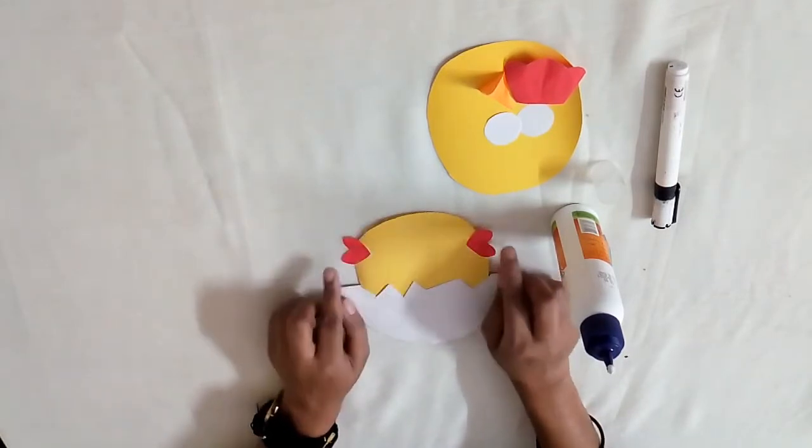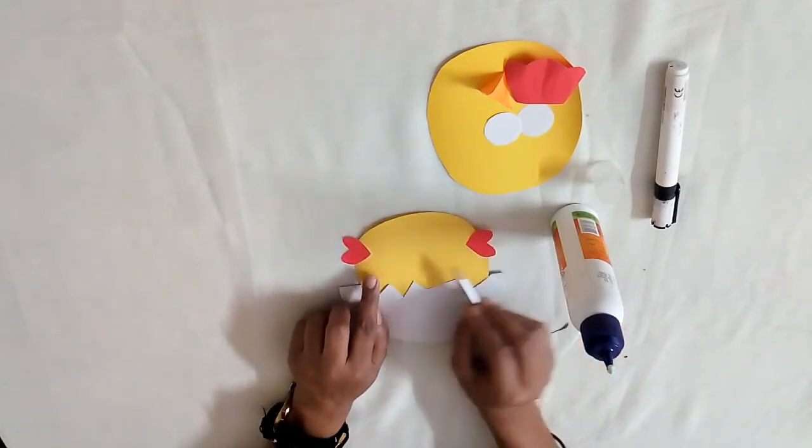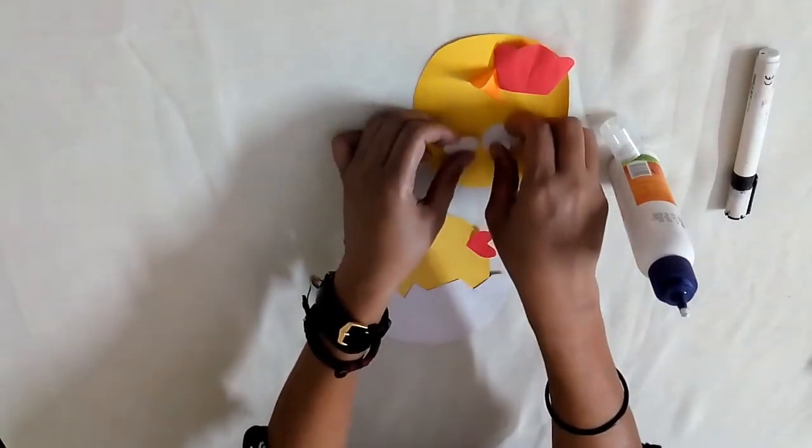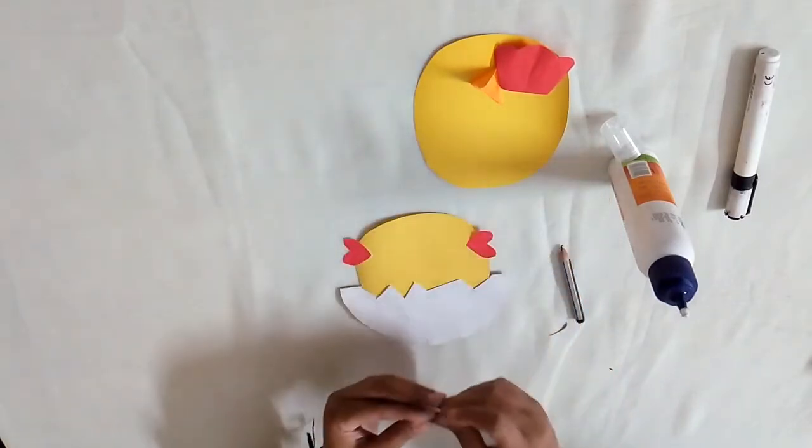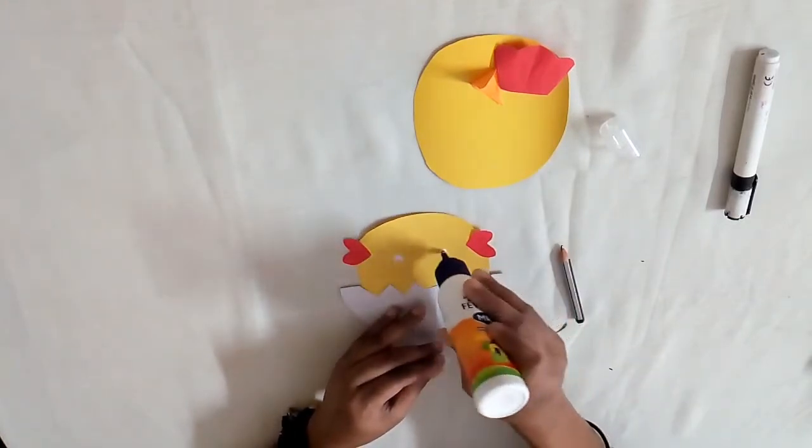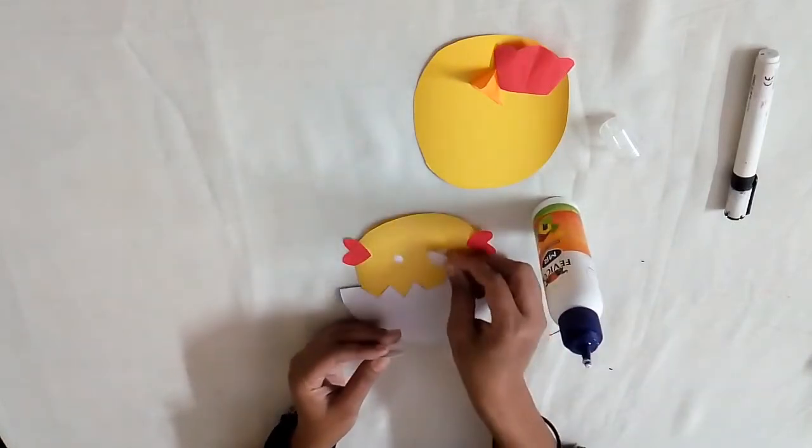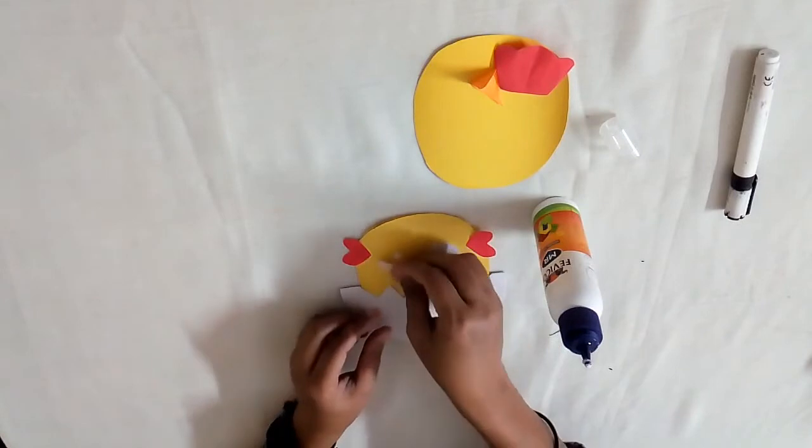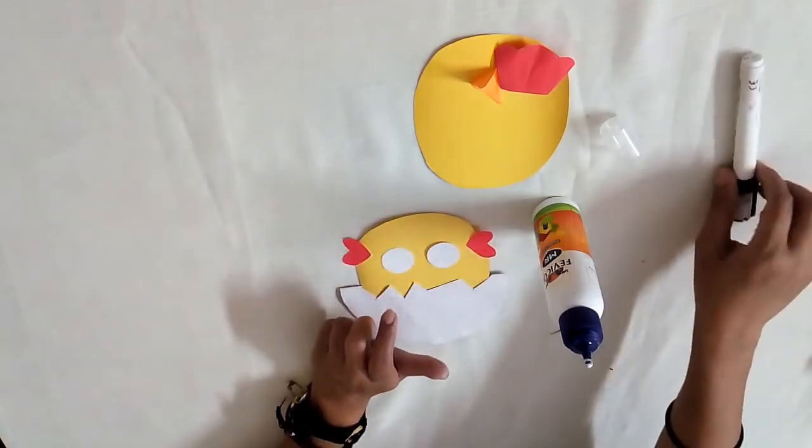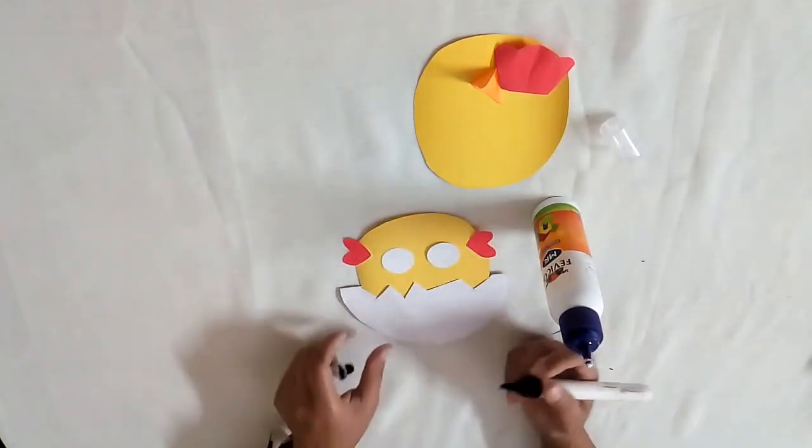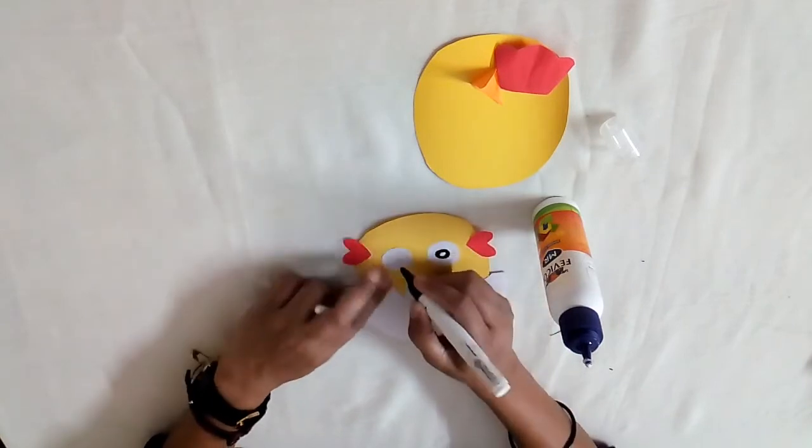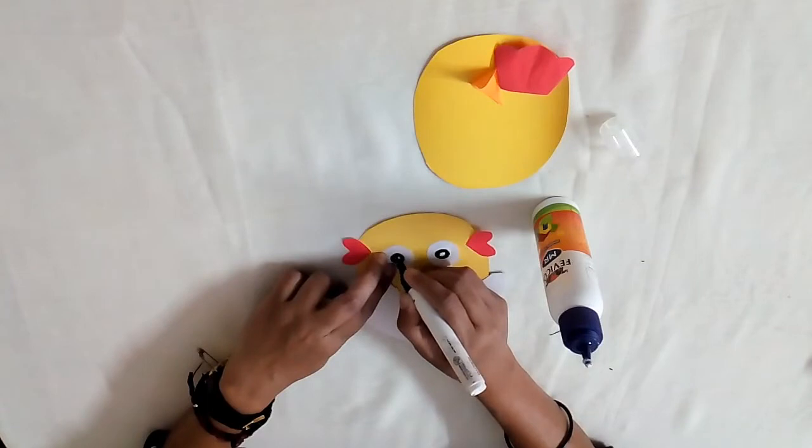Now we will make eyes using white circular shaped paper. Add glue and glue them on. Now I will use black sketch pen to make the circle inside this circle and I will fill this circle with black color.